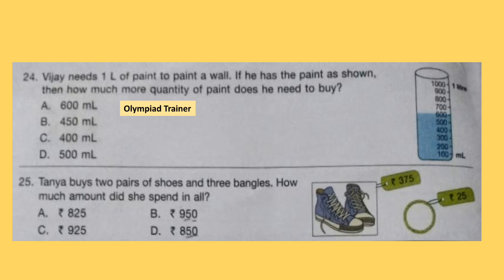Question 25. Tanya buys 2 pairs of shoes and 3 bangles. How much amount did she spend in all? One pair of shoes costs Rs. 375, so 2 pairs will cost Rs. 750. One bangle costs Rs. 25, so 3 bangles will cost Rs. 75. Add both amounts and the answer will be option A: Rs. 825.